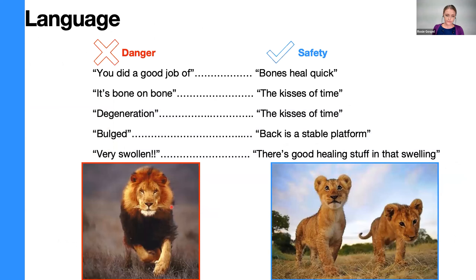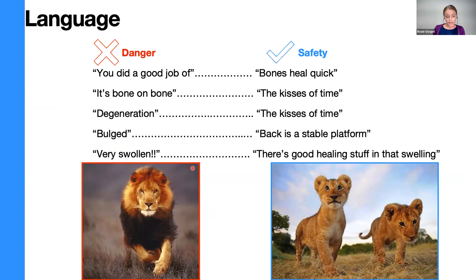Back to language again — what we as health professionals say, and also our non-verbal communication, is being carefully observed and remembered by our patients. If we use dangerous language and overly alarm a patient for no good reason, it could be enough to get the ball rolling for pain chronicity, or make existing persistent pain worse. Remember, pain is about protection — if you give the patient the idea that there's something dangerous going on with the body part, it might turn up the volume on a hypersensitive pain system.